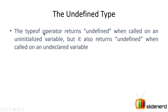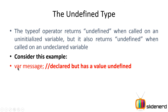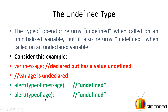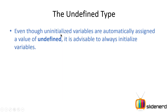The typeof operator returns undefined when called on an uninitialized variable — so var test; followed by typeof test gives you undefined. But it also returns undefined when called on an undeclared variable. For example, if you have var message; declared but no variable called age anywhere in your code, alert(typeof message) gives undefined and alert(typeof age) also gives undefined — even though age was never declared.